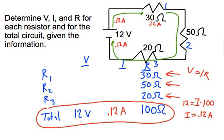0.12 amps must go through here, here, and here. We don't lose any current along the way. So now I can fill in 0.12 amps for all of the currents because it's series.